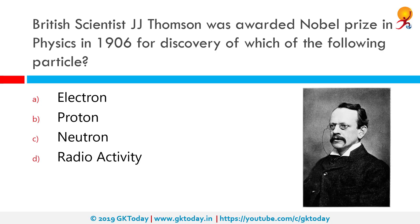British scientist J.J. Thomson was awarded the Nobel Prize in Physics in 1906 for the discovery of which particle? The correct answer is the Electron. Sir Joseph John Thomson was an English physicist and Nobel laureate credited with the discovery and identification of the electron, the first subatomic particle to be discovered.